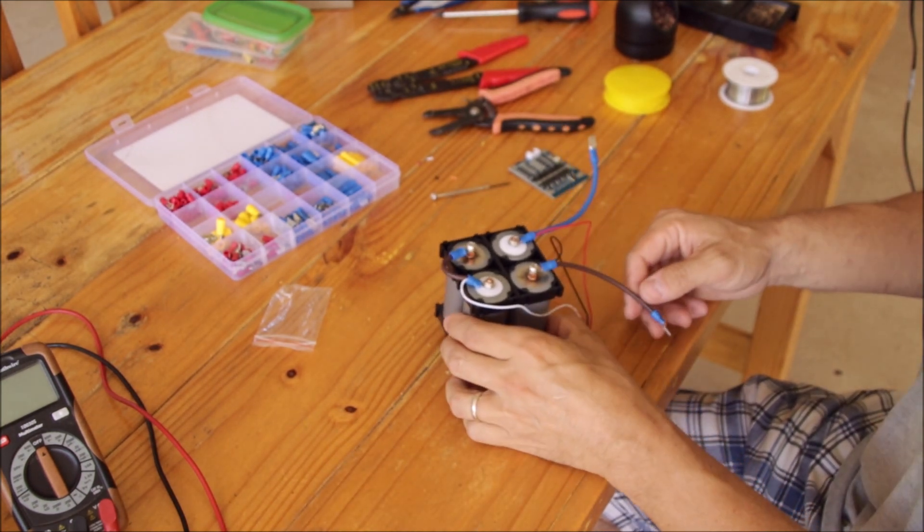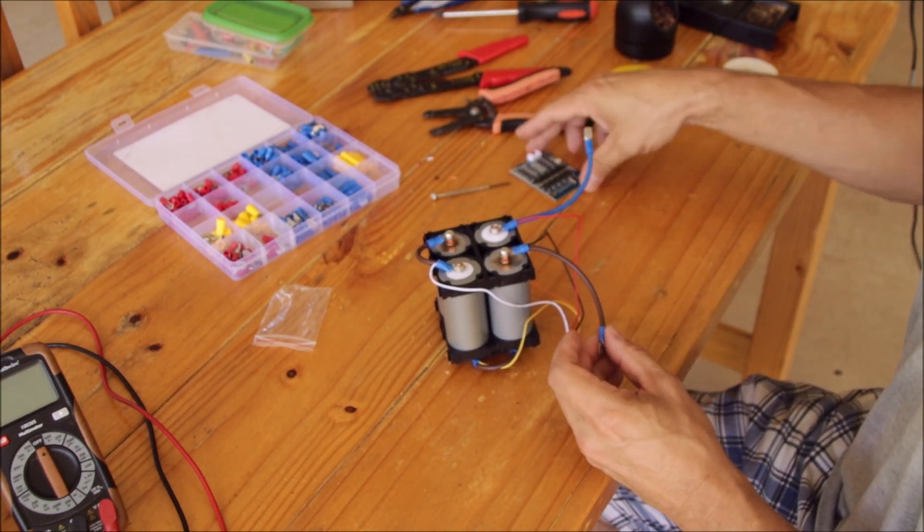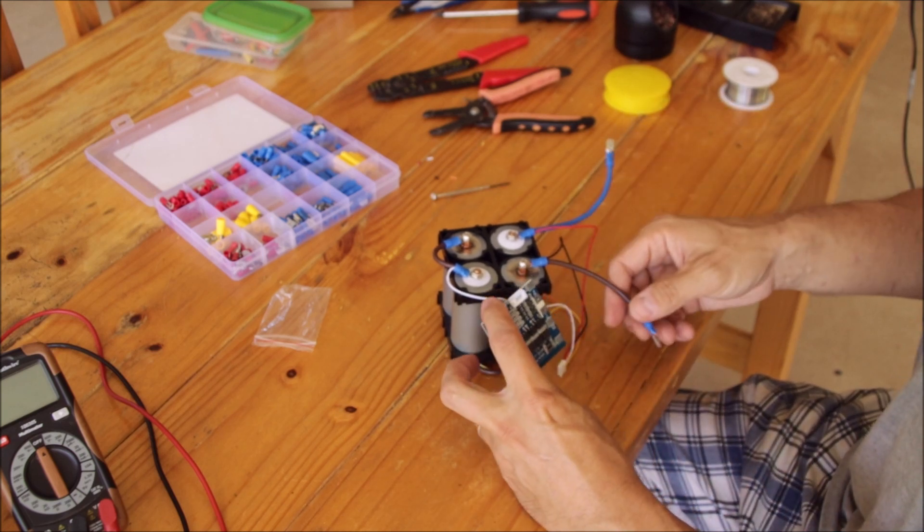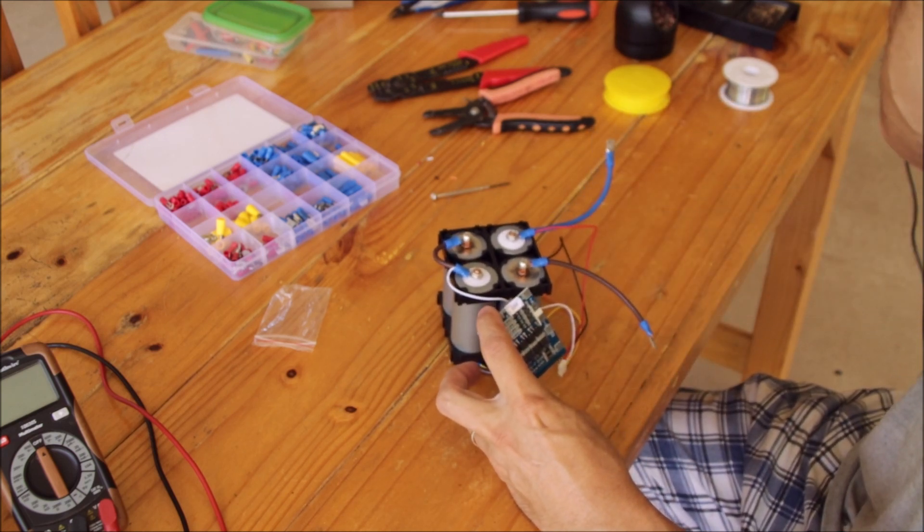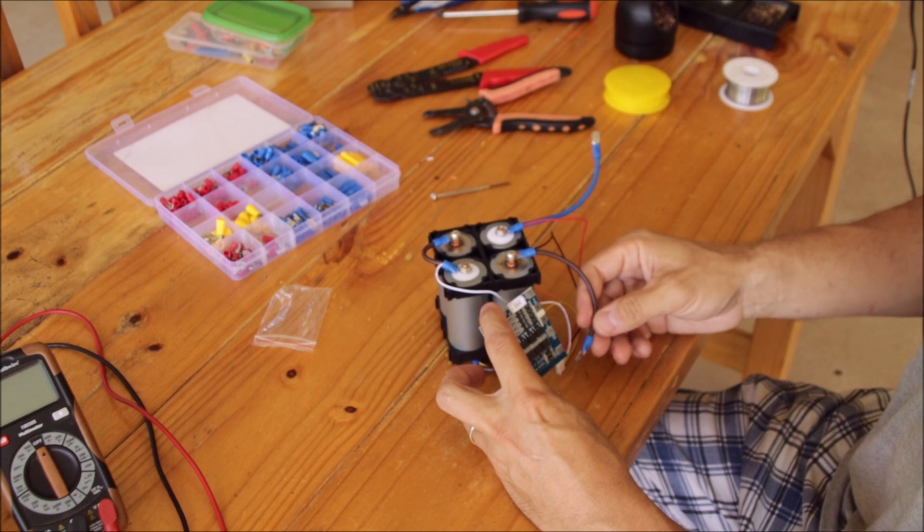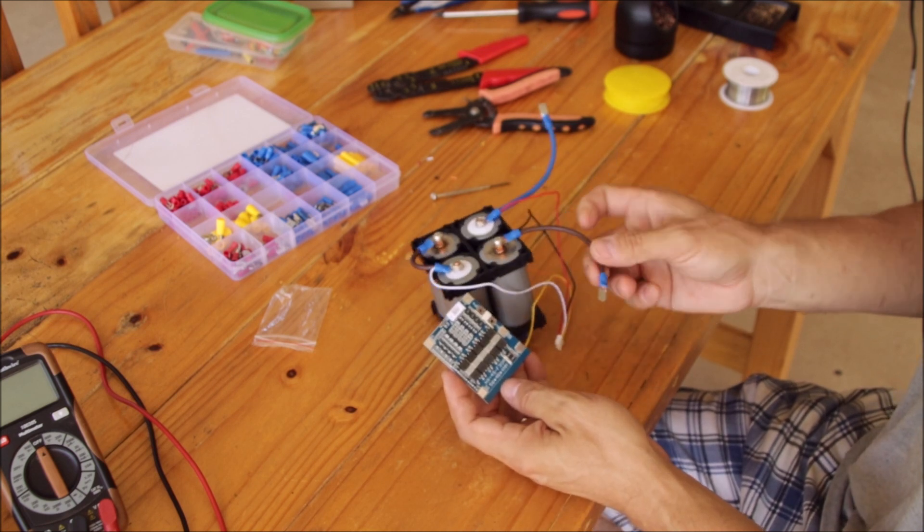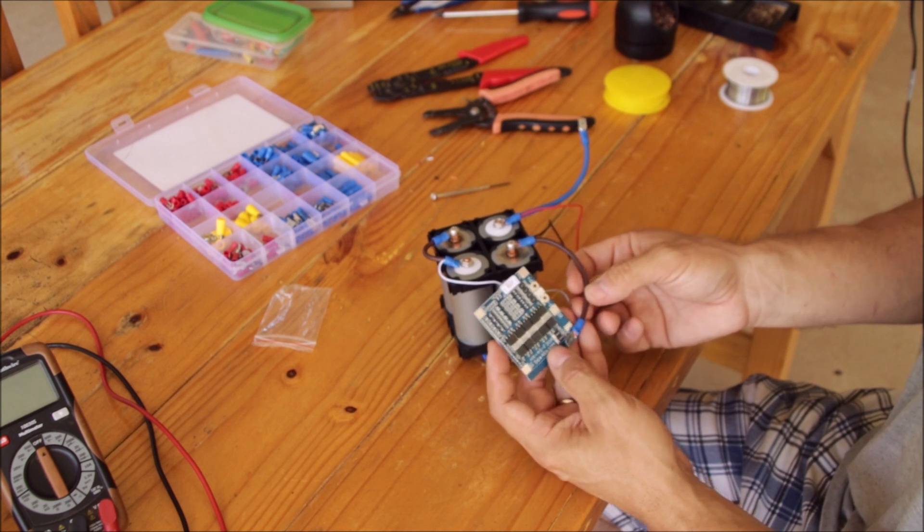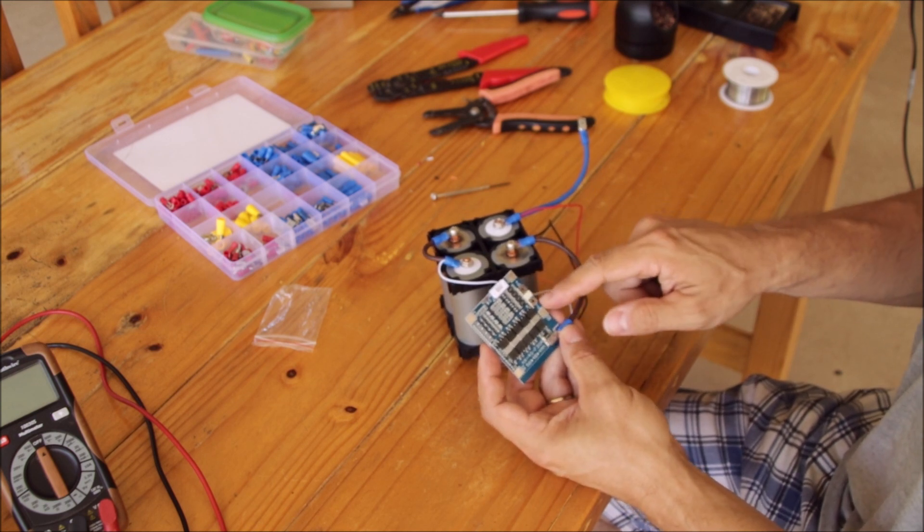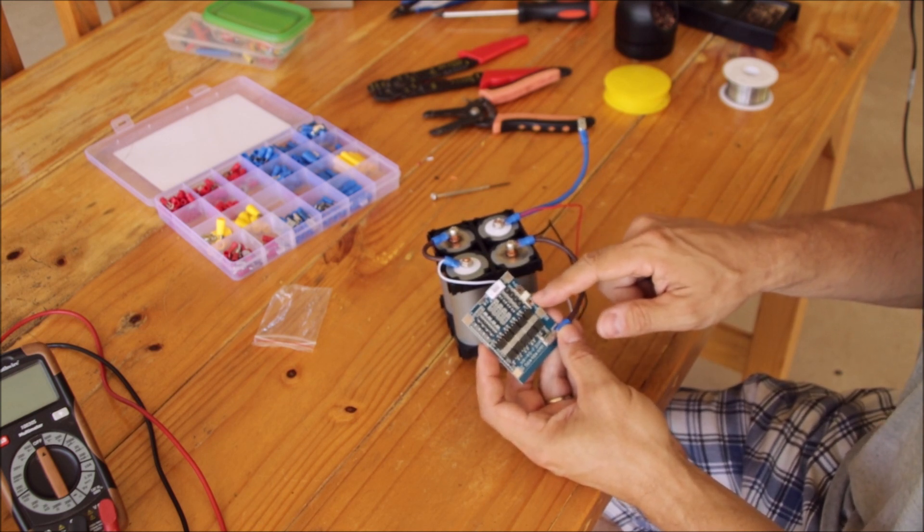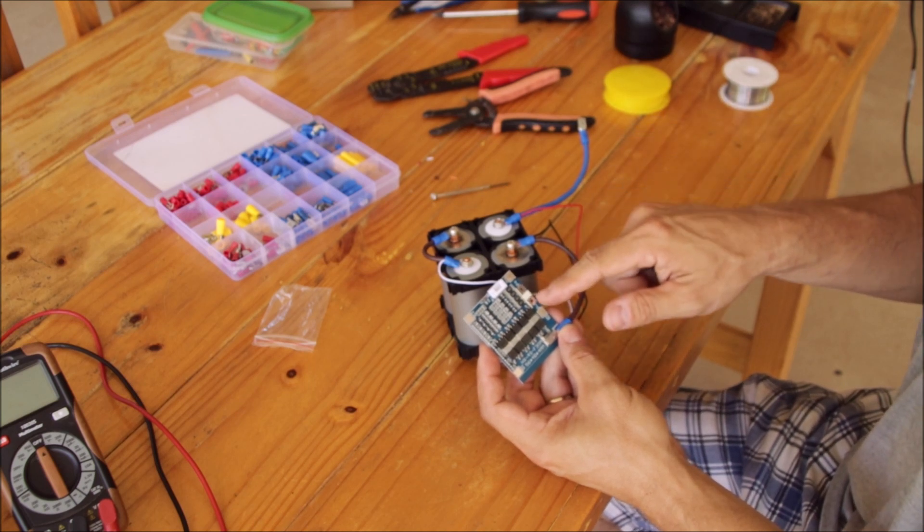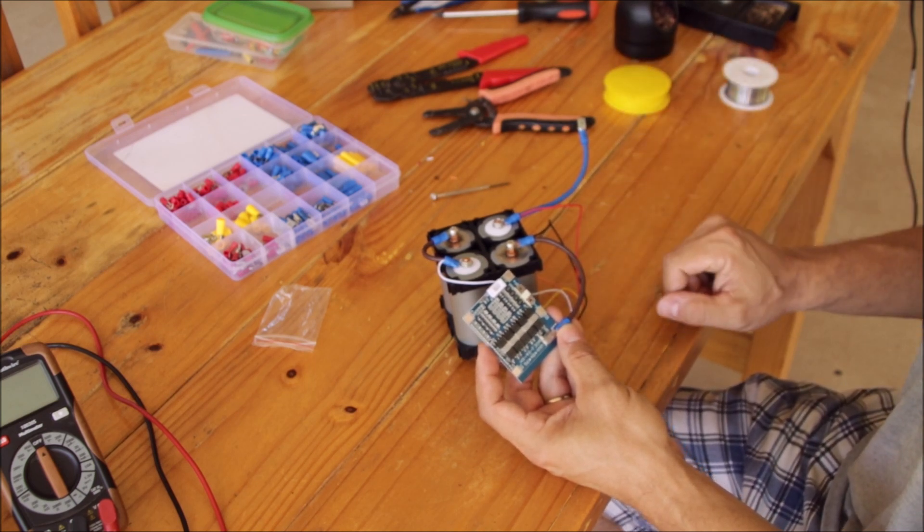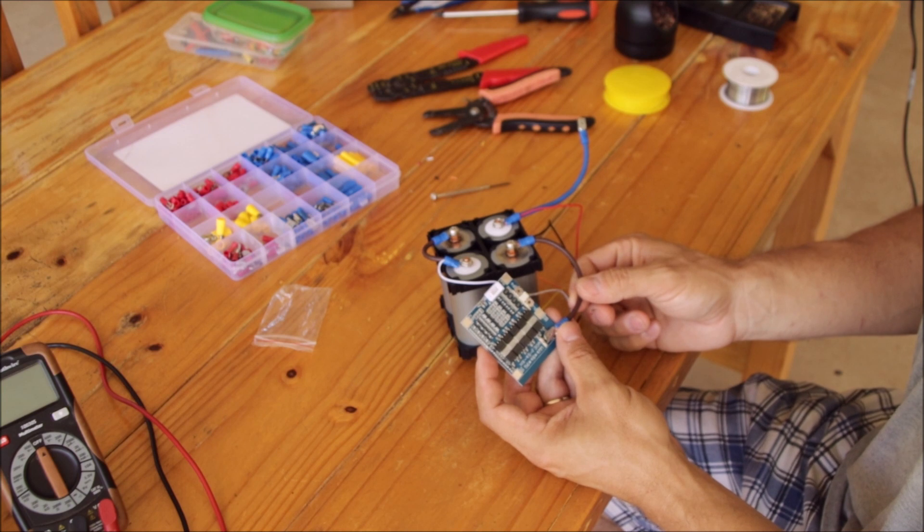But now you already noticed, here of course the BMS needs to be inserted. We have to remove this one lug and solder on B minus. And then P minus will then go to the load there, to the UPS. So let's do that. B minus is now on there.